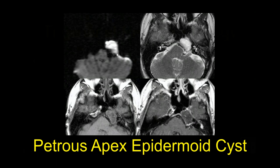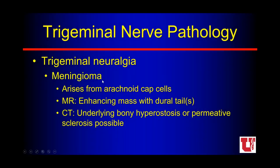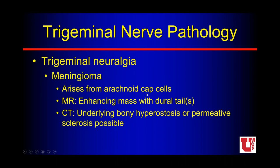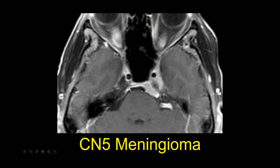A meningioma may also present with trigeminal neuralgia. These are the most common extraaxial dural-based masses in adults, arising from arachnoid cap cells, often with dural tails and a hyperostotic or permeative sclerotic reaction in the adjacent bone on CT. On axial T1 post-contrast with fat saturation, we see an enhancing dural-based mass in the prepontine cistern with nice dural tails. On the normal side we have CSF-like signal in the trigeminal cistern; on the affected side, that CSF signal is lost and replaced by enhancement from the meningioma extending into the trigeminal cistern or Meckel's cave.